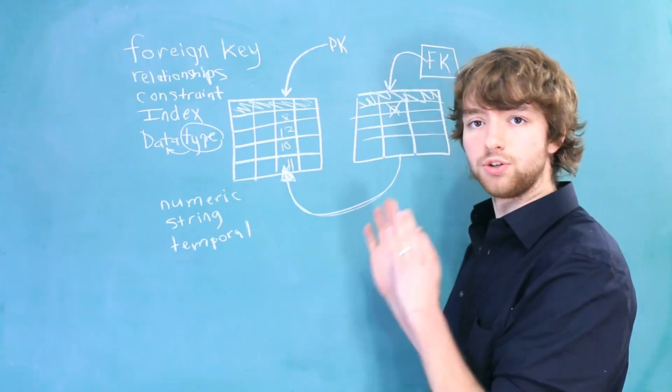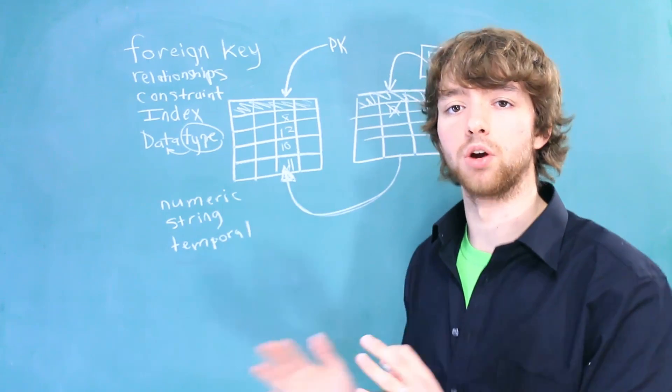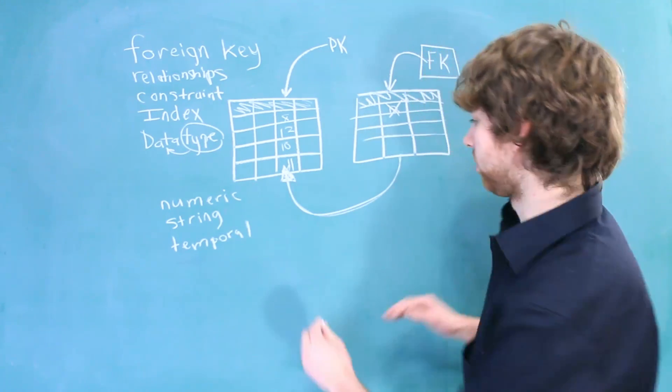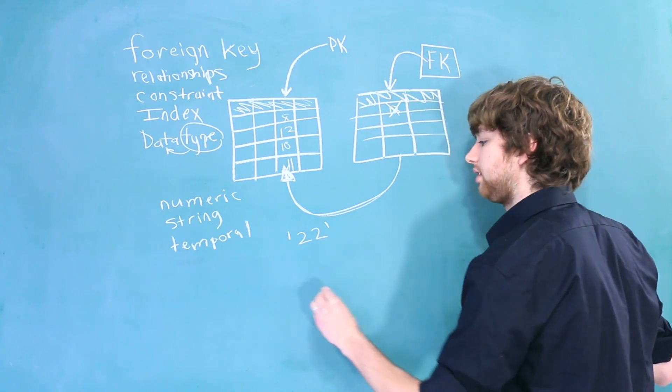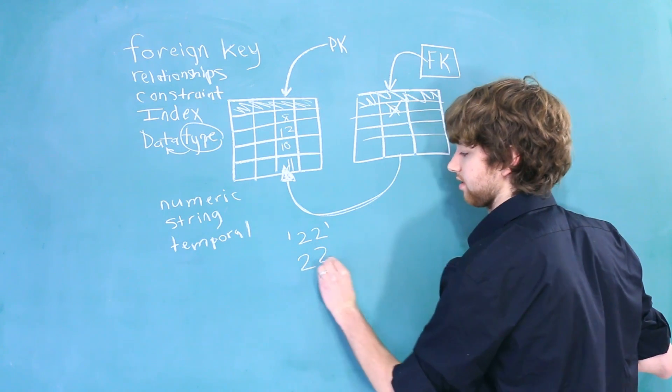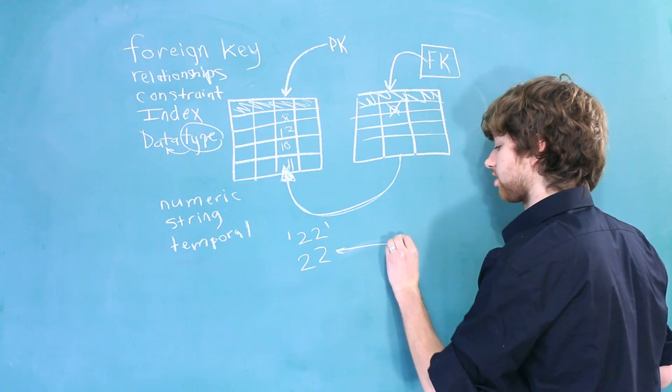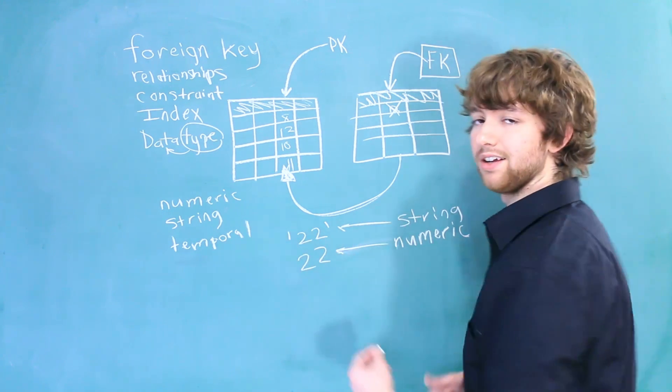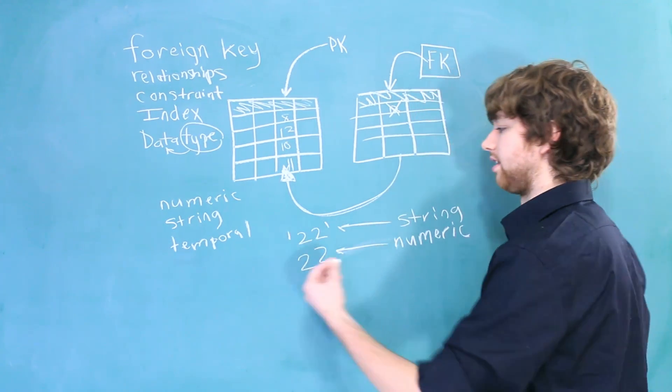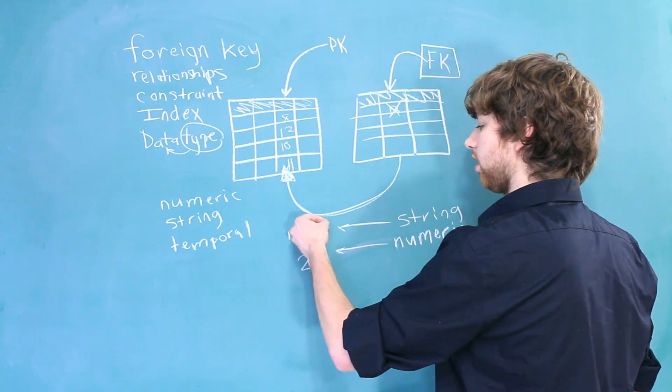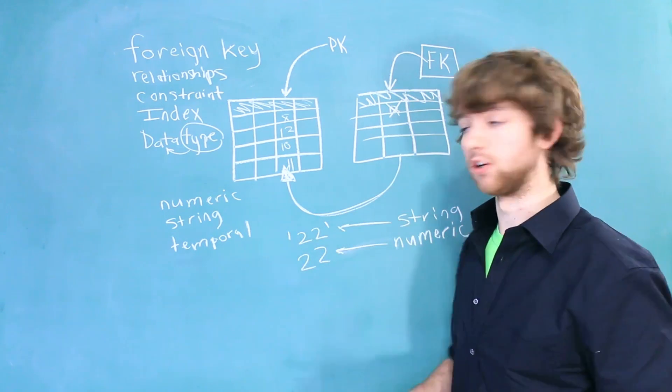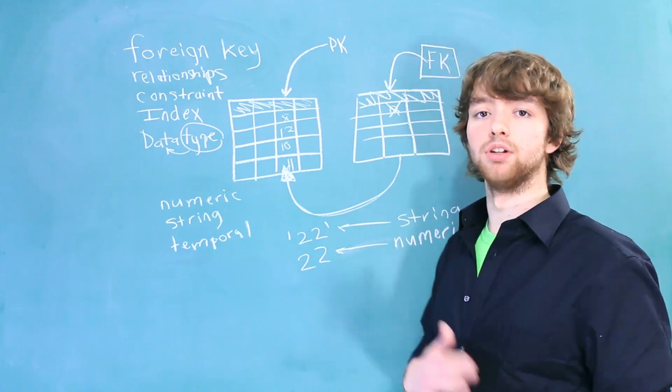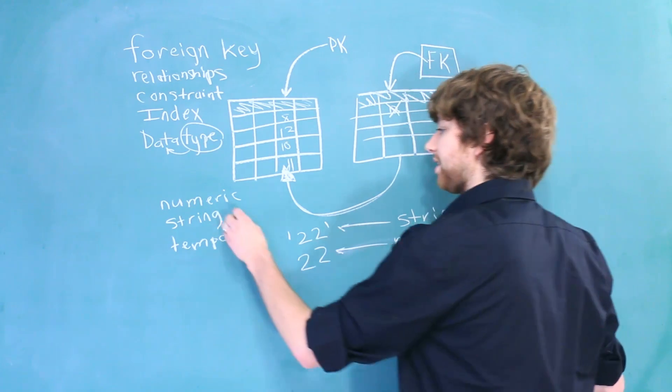Then there's a couple of other data types that don't really fit into these categories. A data type is used to tell the database how to work with our data. So, this is completely different than this. In this situation, this is numeric data and this is string data. String data is essentially data that is enclosed in quotes and is just a sequence of characters. So a number is an example of a character.